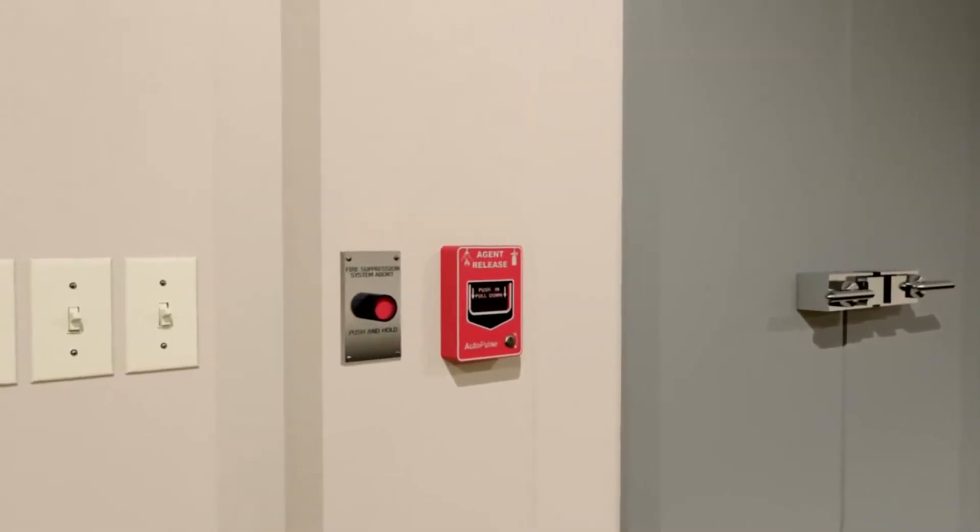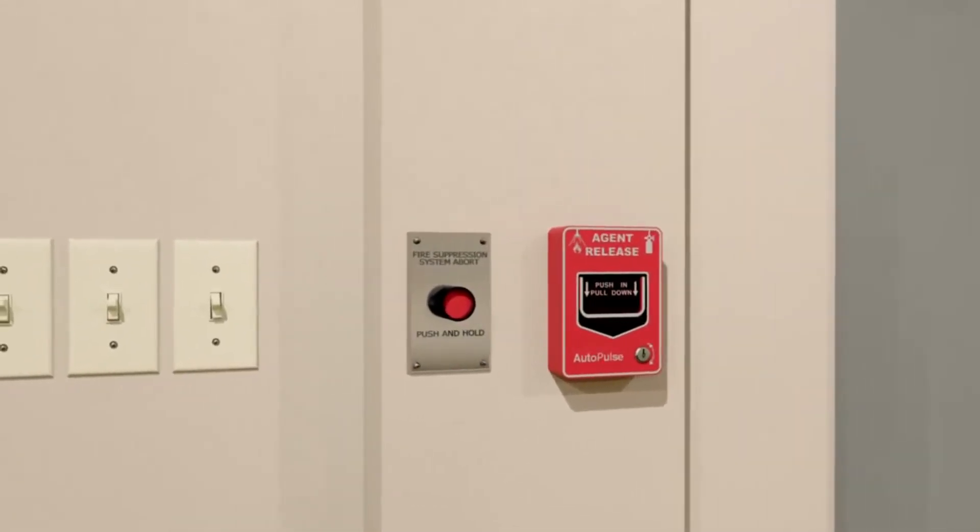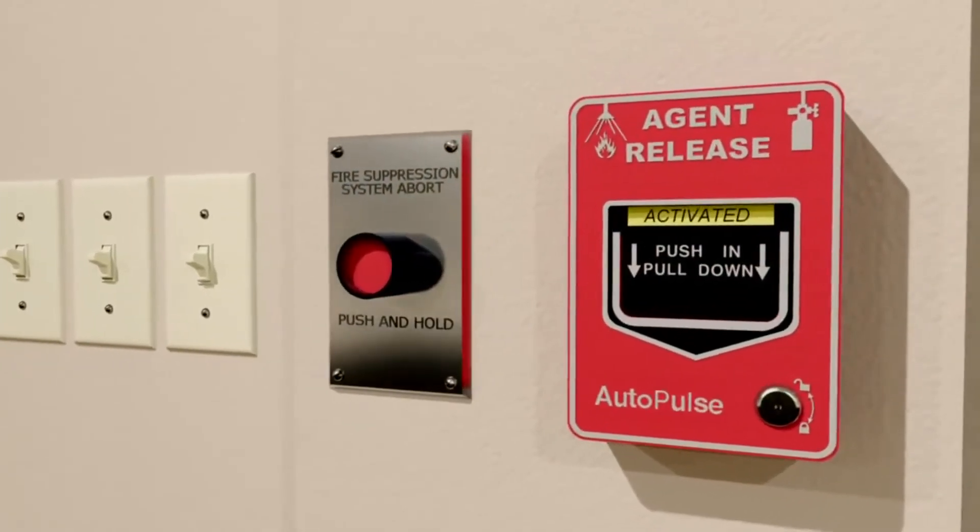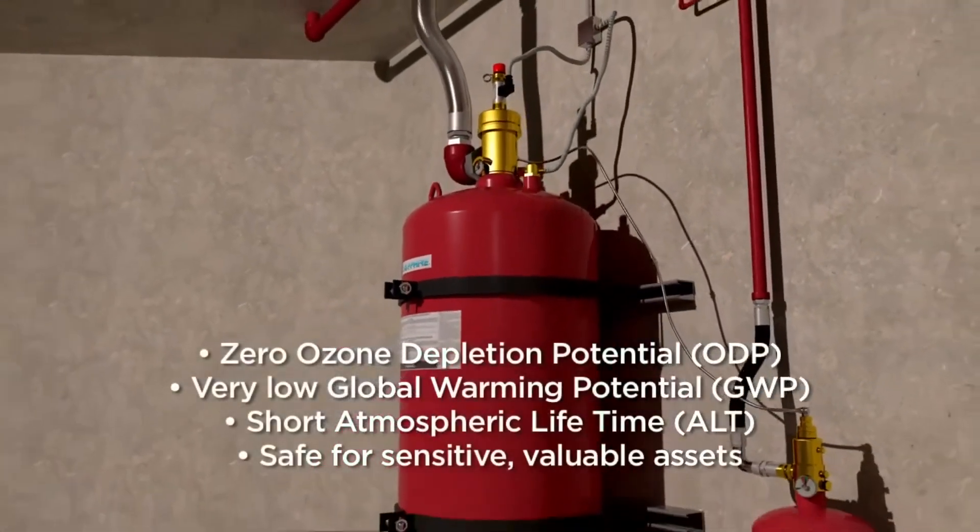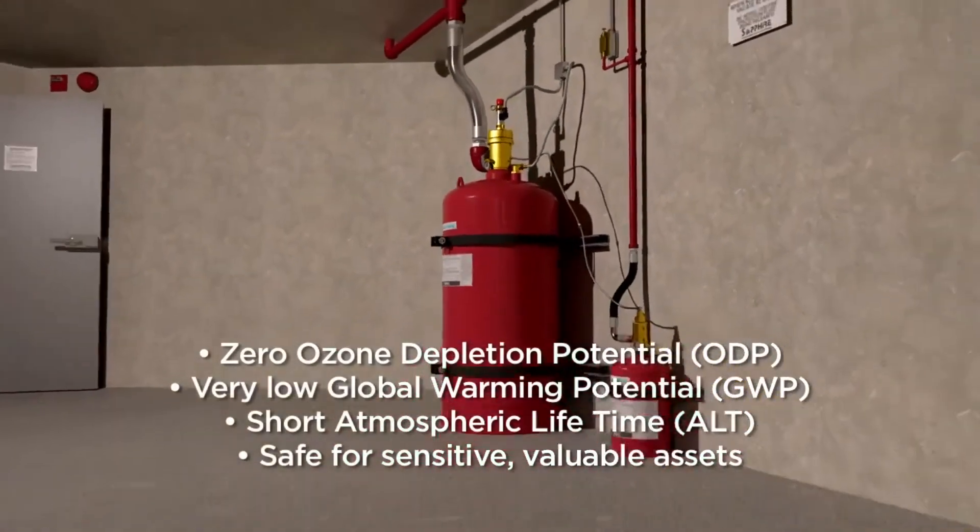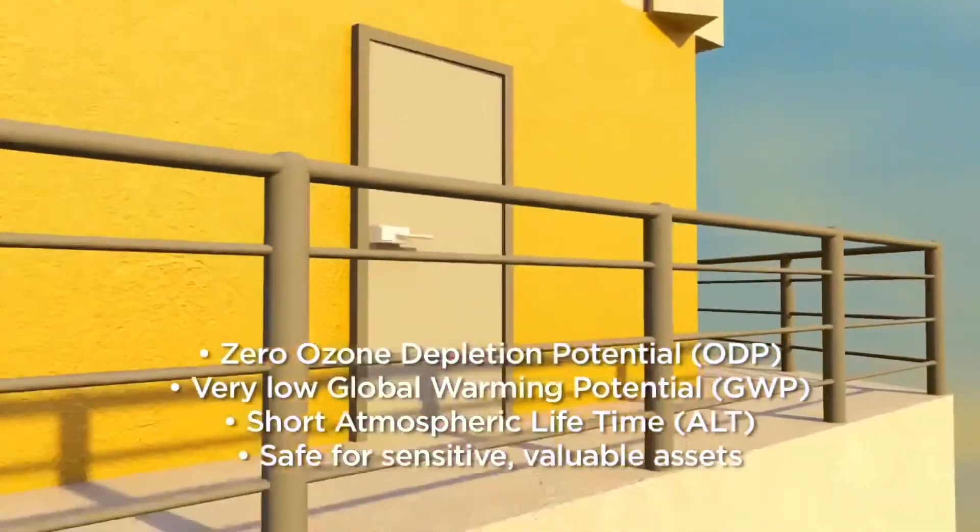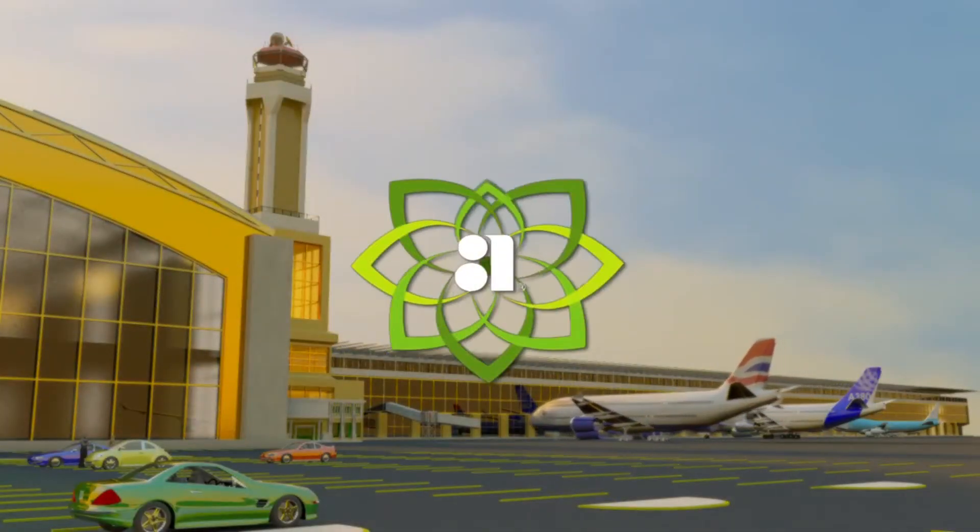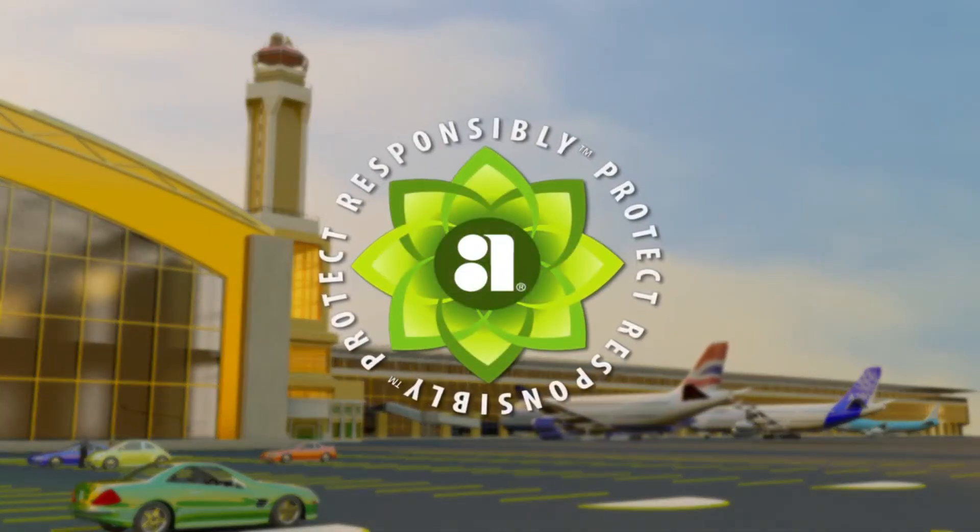The system can also be actuated using a remote manual pulse station, which may be located along the path of egress. Go with sustainable technology that meets industry performance standards while safeguarding life and the environment. The Ansel Sapphire Fire Suppression System. The responsible clean agent alternative.